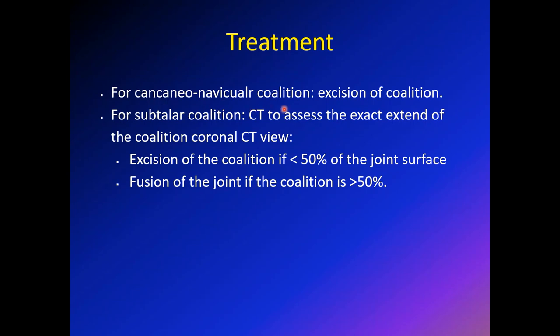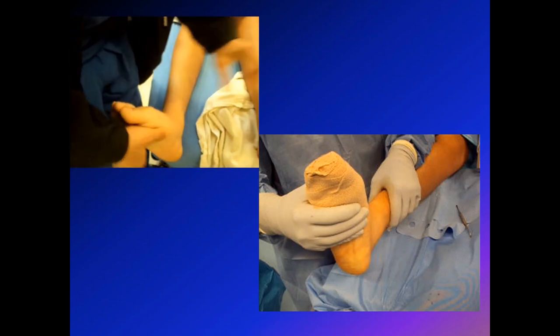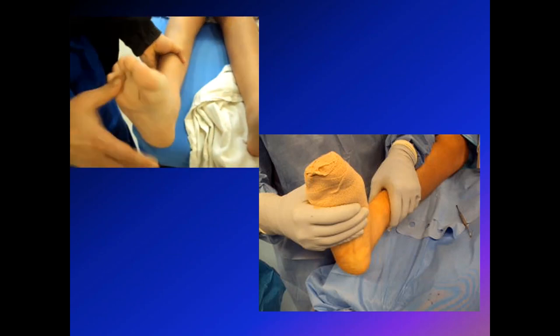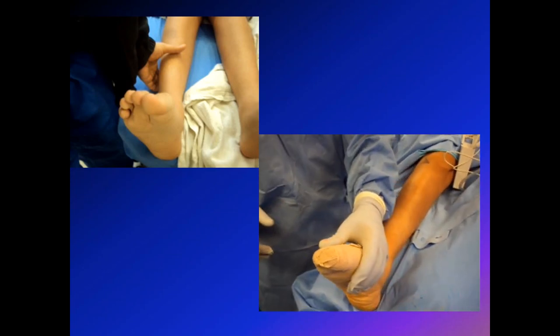The surgery for calcaneonavicular coalition is excision of the coalition. For subtalar or talo-calcaneal coalition, you get a CT and assess how much coalition is present. If the coalition is less than 50%, you can excise it. If it is more than 50%, it may be better to fuse the subtalar joint. You can see a pre-surgery picture showing very limited range of motion, and after excision of the coalition there is much more range of motion. So for calcaneonavicular, treatment is excision; for subtalar, it depends: less than 50% — remove the coalition; more than 50% — fuse the whole subtalar joint.